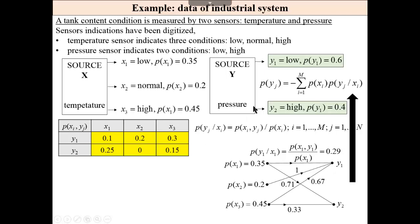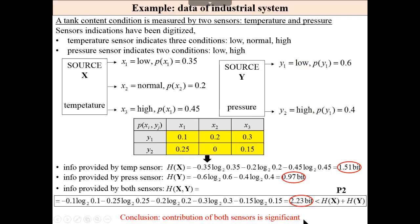And then we may calculate all the entropies. Now, please observe that information provided by the temperature sensor, like a conclusion, engineering conclusion. The information provided by a temperature sensor is 1.51 bit. And information provided by a pressure sensor is two-thirds of this, is lower. However, a contribution of both is significant. So as a conclusion, we may say yes, it has a sense to install both sensors because they are giving information that contributes to the total information. And total information is 2.23-bit information obtained from these two sensors.